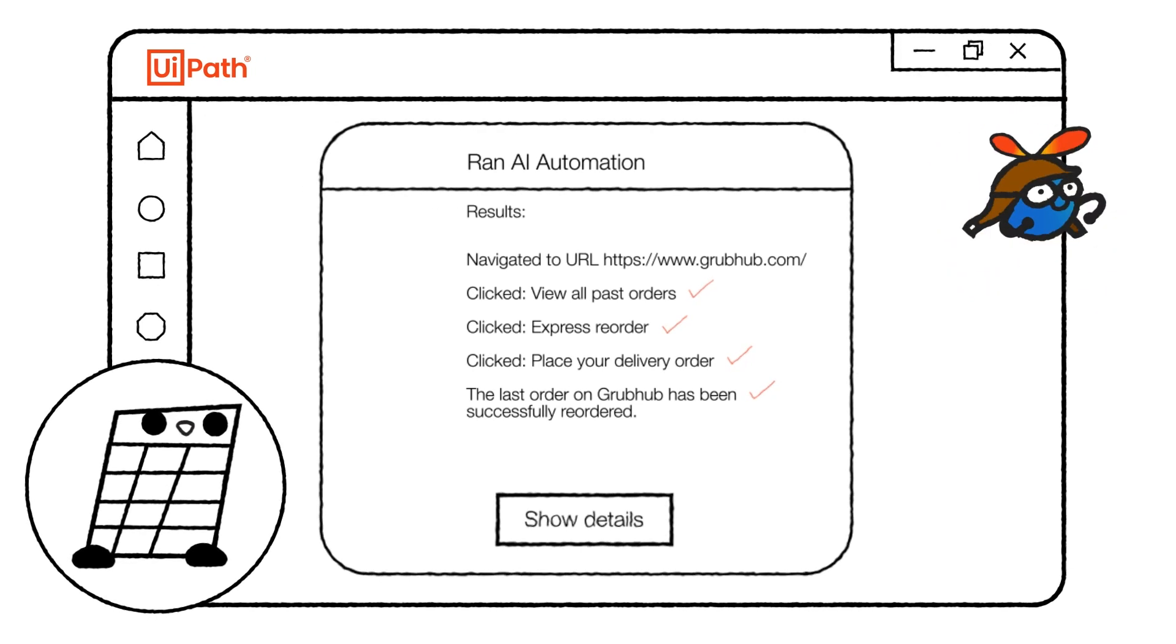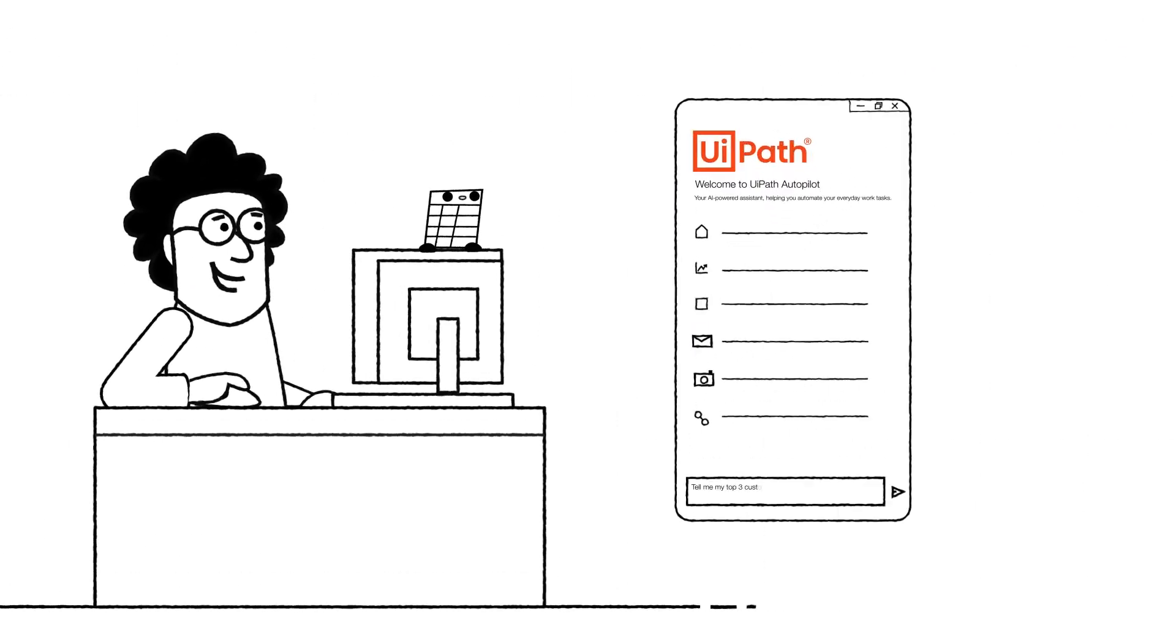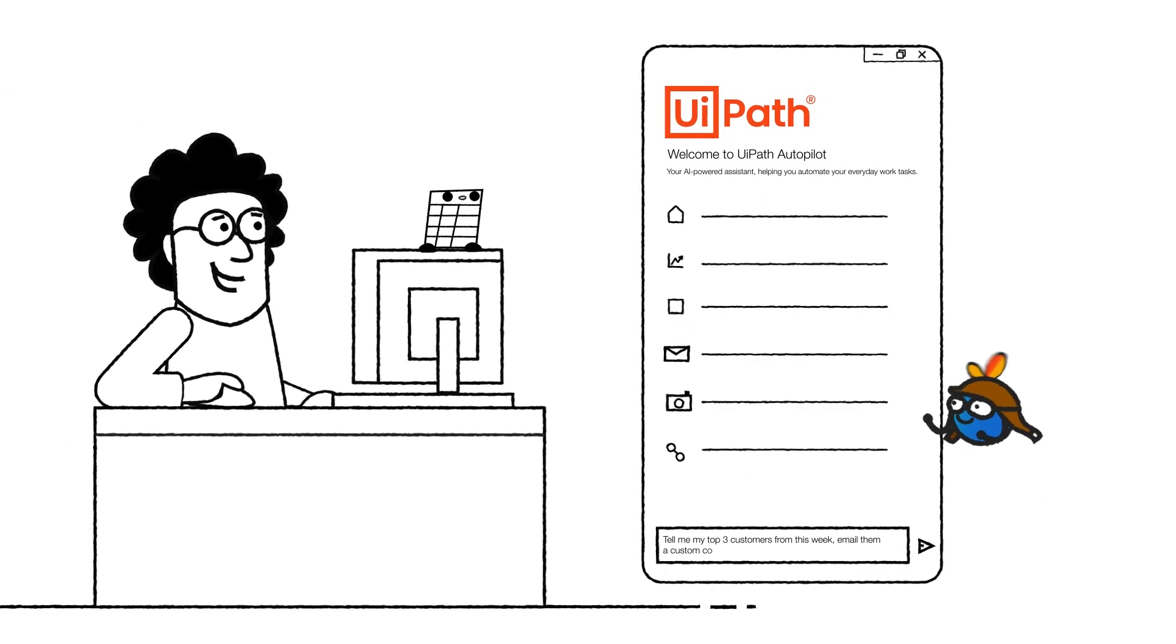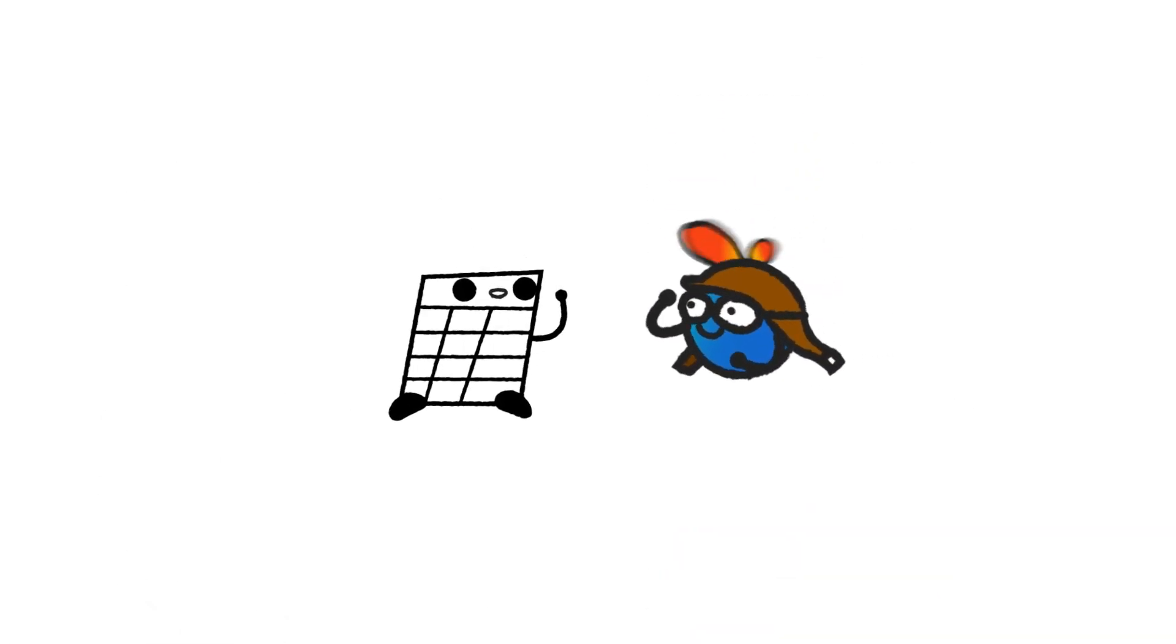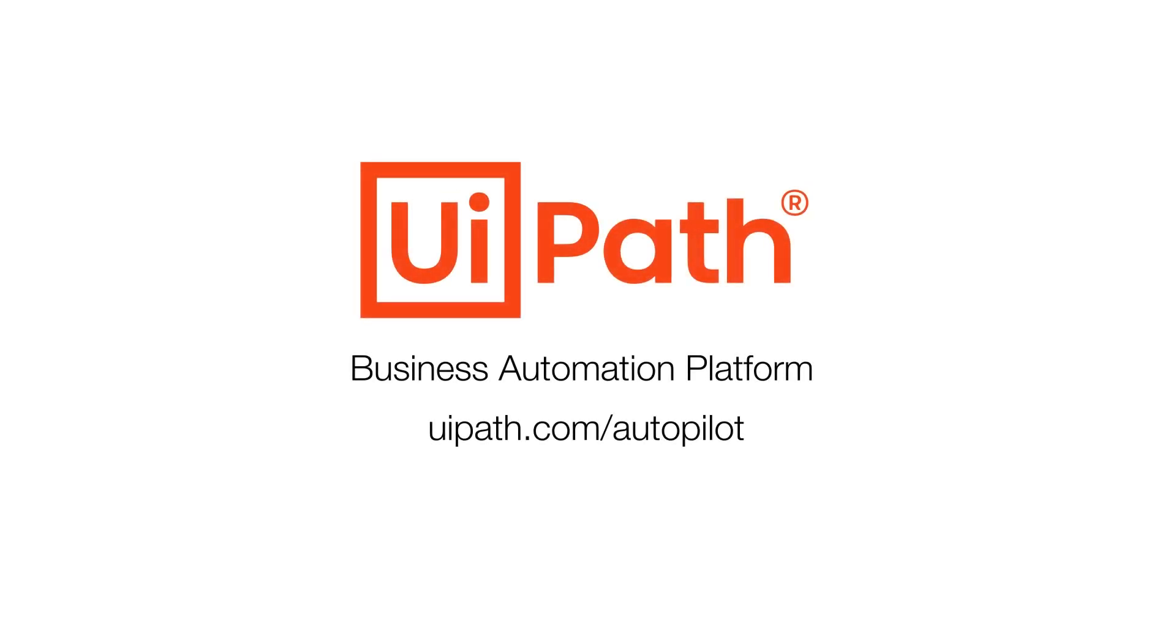With Autopilot at the Emporium, the conversation between team and machine is just getting started. UiPath makes work better for literally everyone in your company. Even, Shirley, the spreadsheet. Meet your partner for AI at work at UiPath.com forward slash autopilot.